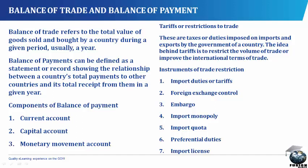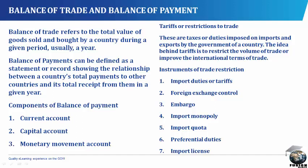Unfavorable balance of payment refers to a debit balance in the balance of payments. It means that the payment on visible and invisible imports is greater than the receipts on visible and invisible exports. Unfavorable balance is just the opposite of favorable balance — it occurs when the payments made to another country on visible and invisible imports are greater than receipts on visible and invisible exports. It can also be referred to as adverse or deficit balance.